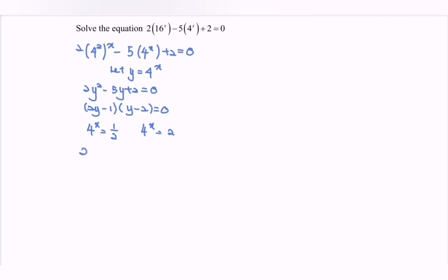So we have 2 to the power of 2x is equal to 2 power of negative 1. 2 to the power of 2x is equal to 2 to the power of 1.